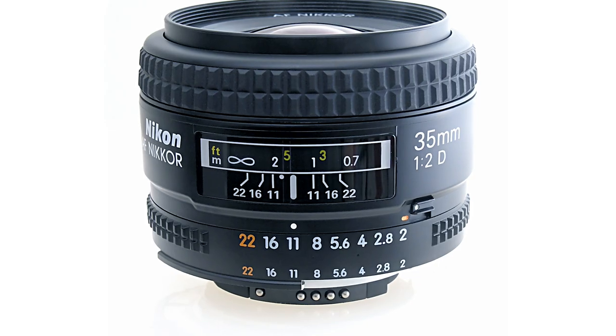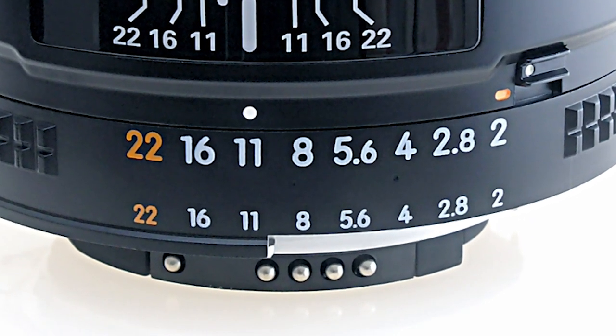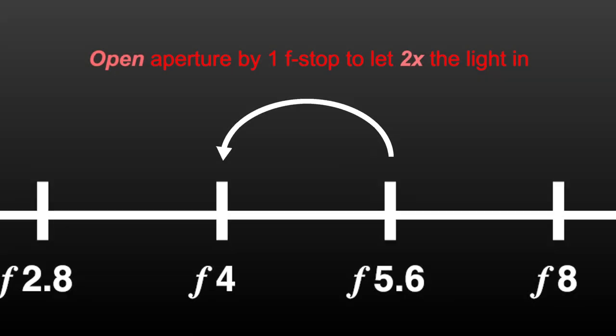You'll notice that every single lens has a set of numbers printed on it: 1.4, 2.0, 2.8, 4, 5.6, 8, 11, 16, and 22. These numbers are F stops, and they indicate how open or closed the lens's aperture is. If you open the aperture by one F stop, you let twice as much light pass through the lens. If you close the aperture by one F stop, you cut the amount of light in half.